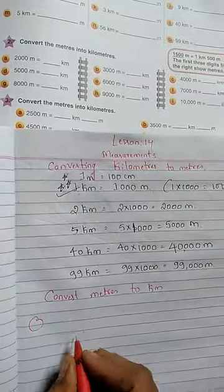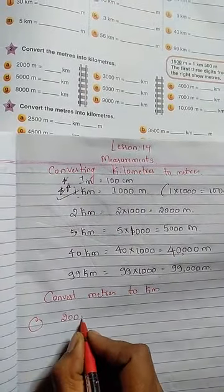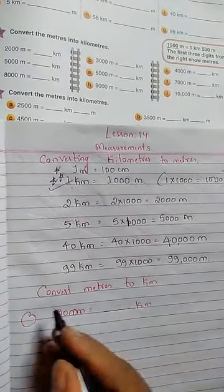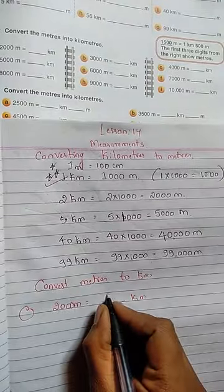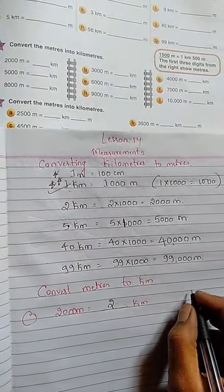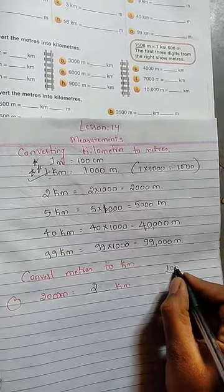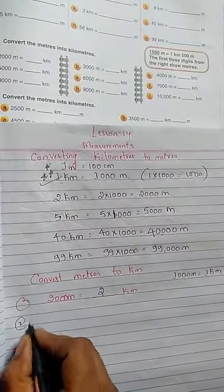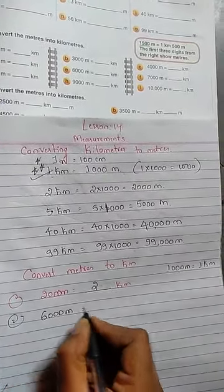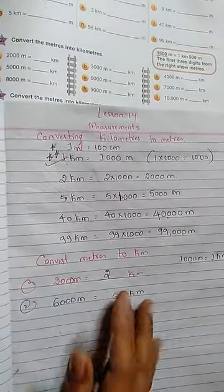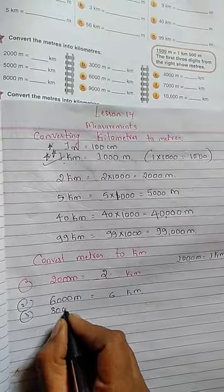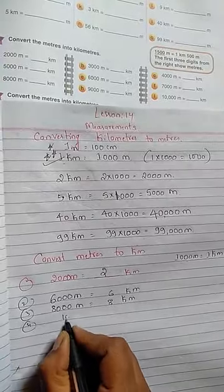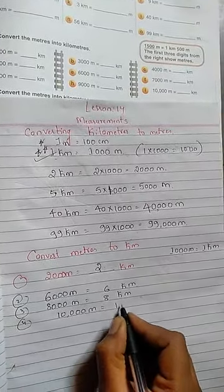For example, here they have given 2000 meters is equals to how many kilometers? If you remove 3 zeros, it is 2 kilometers. See, 1000 meters is nothing but 1 kilometer, 2000 meters is nothing but 2 kilometers, 6000 meters is nothing but 6 kilometers, 8000 meters is 8 kilometers, 10,000 meters is 10 kilometers.